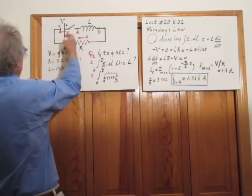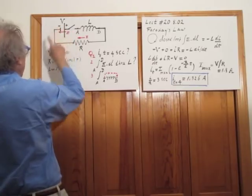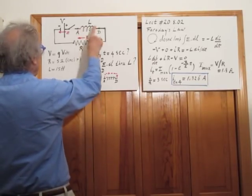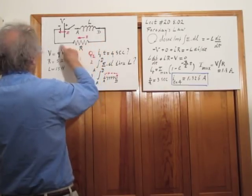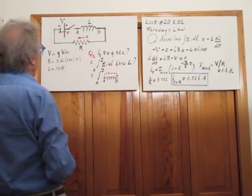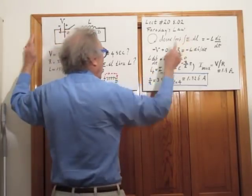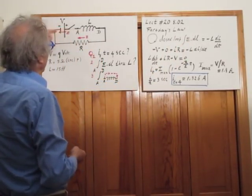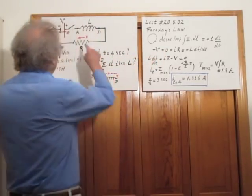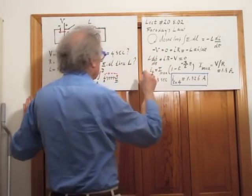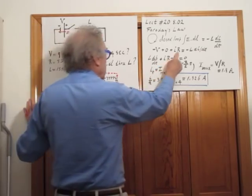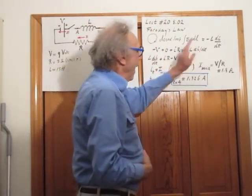The E field in the battery is in the direction from plus to minus. There is no electric field in a superconducting material, so there is no E field in the wire. The current goes in this direction, so there will be an electric field in this direction in the resistance. Starting here, the closed loop integral of E dot dl: the first contribution is minus V, then through the wire is zero, no E field in the self-inductor, then through the resistance gives IR — and that equals minus L di/dt.